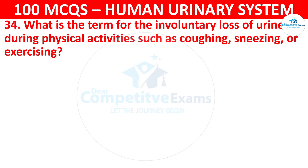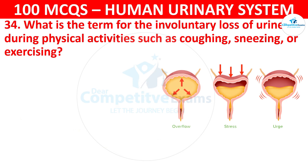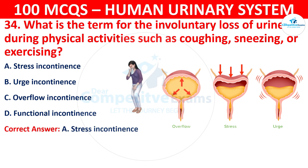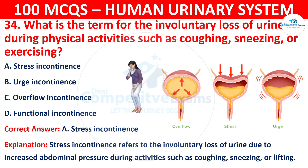Question 34: What is the term for the involuntary loss of urine during physical activities such as coughing, sneezing, or exercising? The options are: stress incontinence, urge incontinence, overflow incontinence, or functional incontinence. The correct answer is A, that is stress incontinence. Stress incontinence refers to the involuntary loss of urine due to increased abdominal pressure during activities such as coughing, sneezing, or lifting.